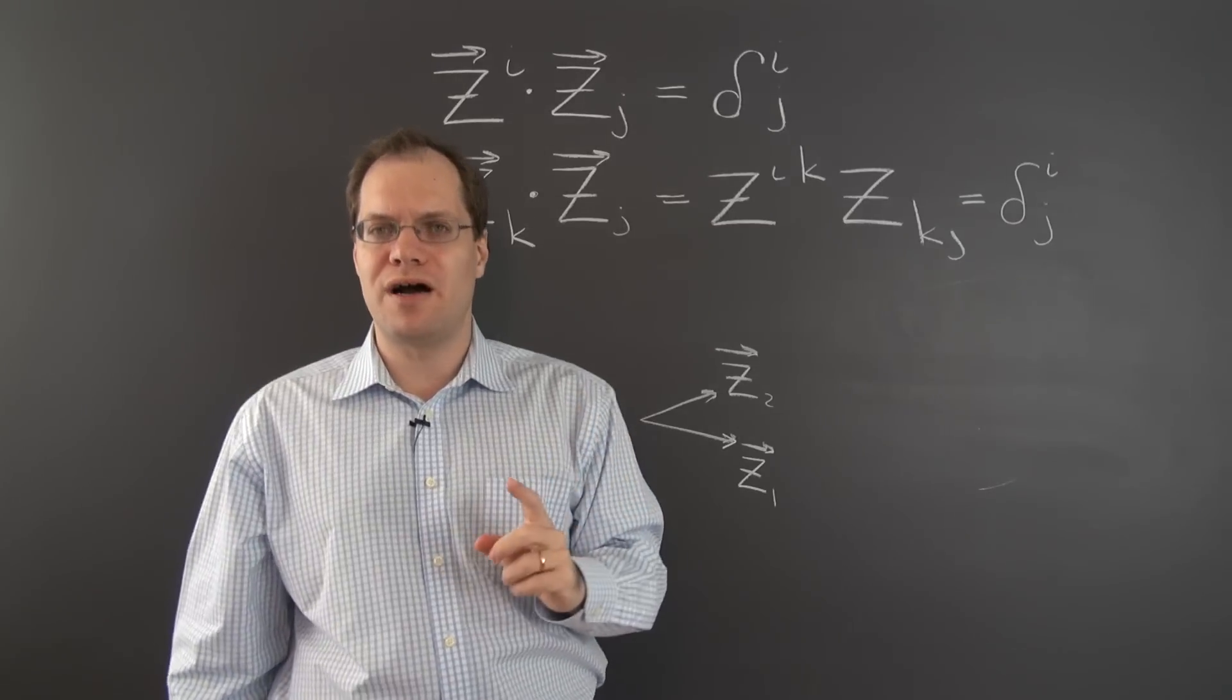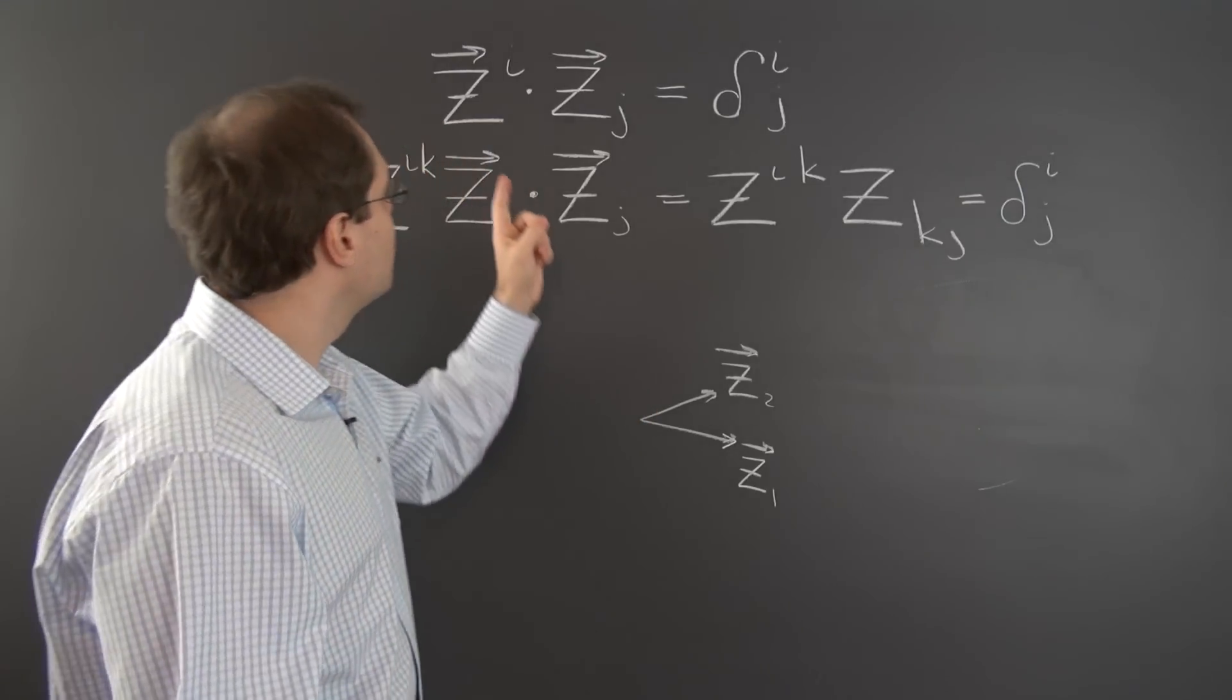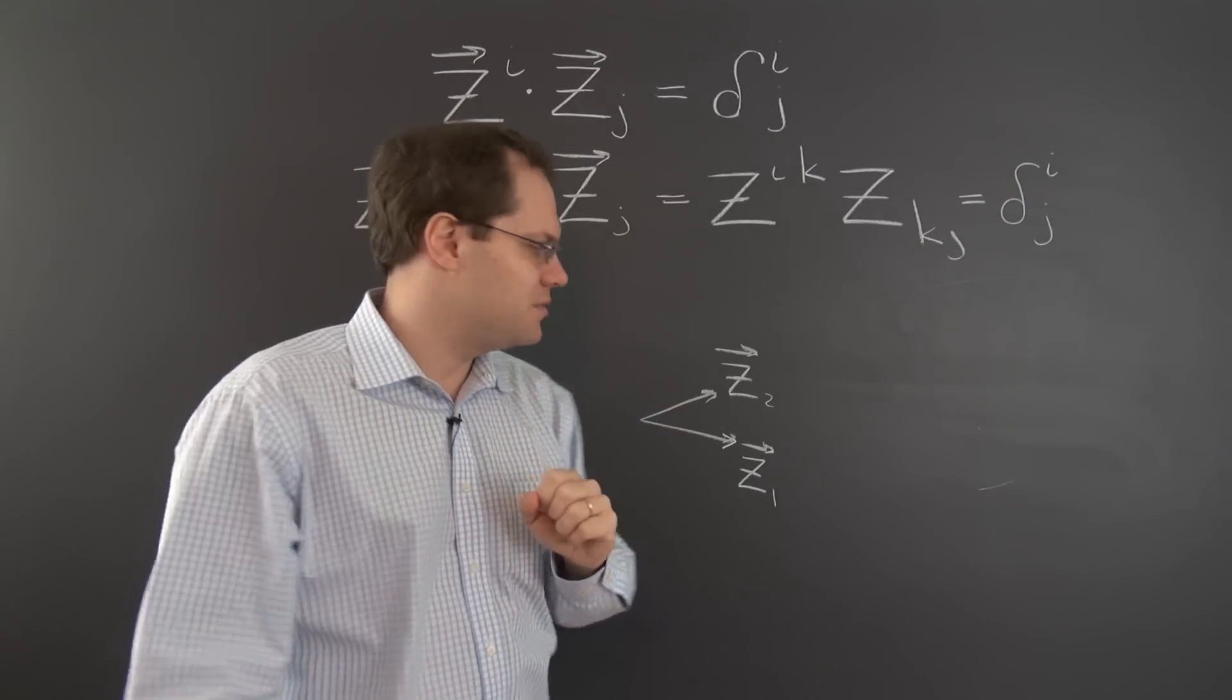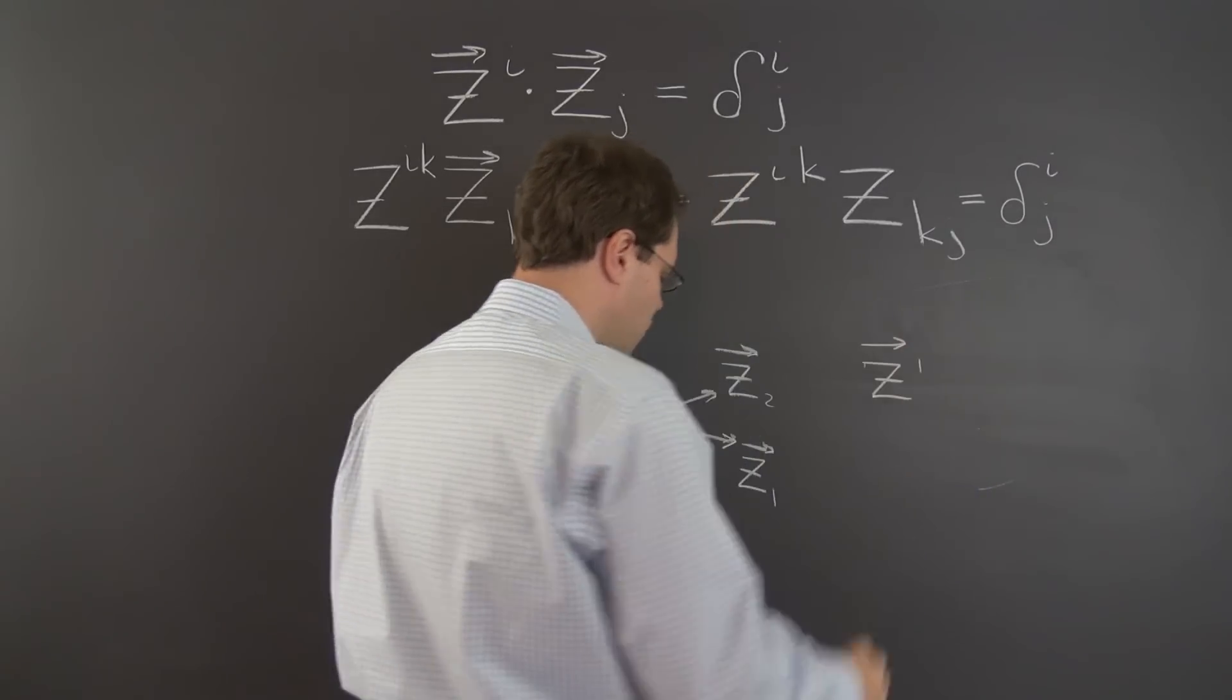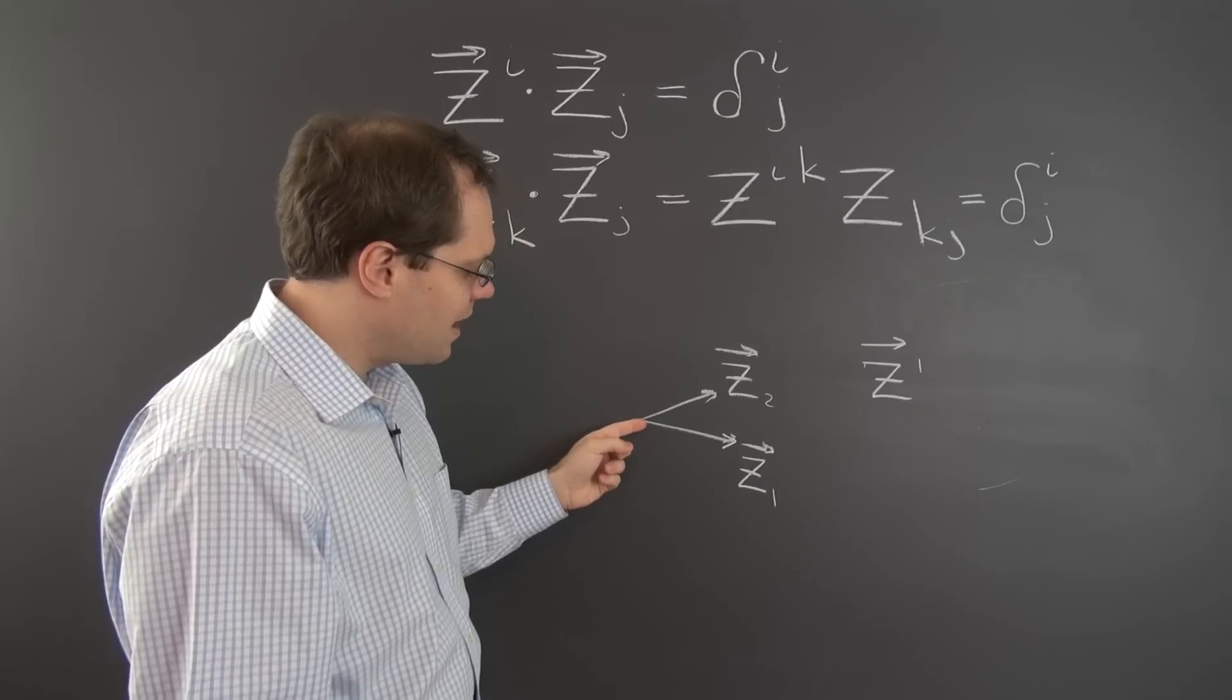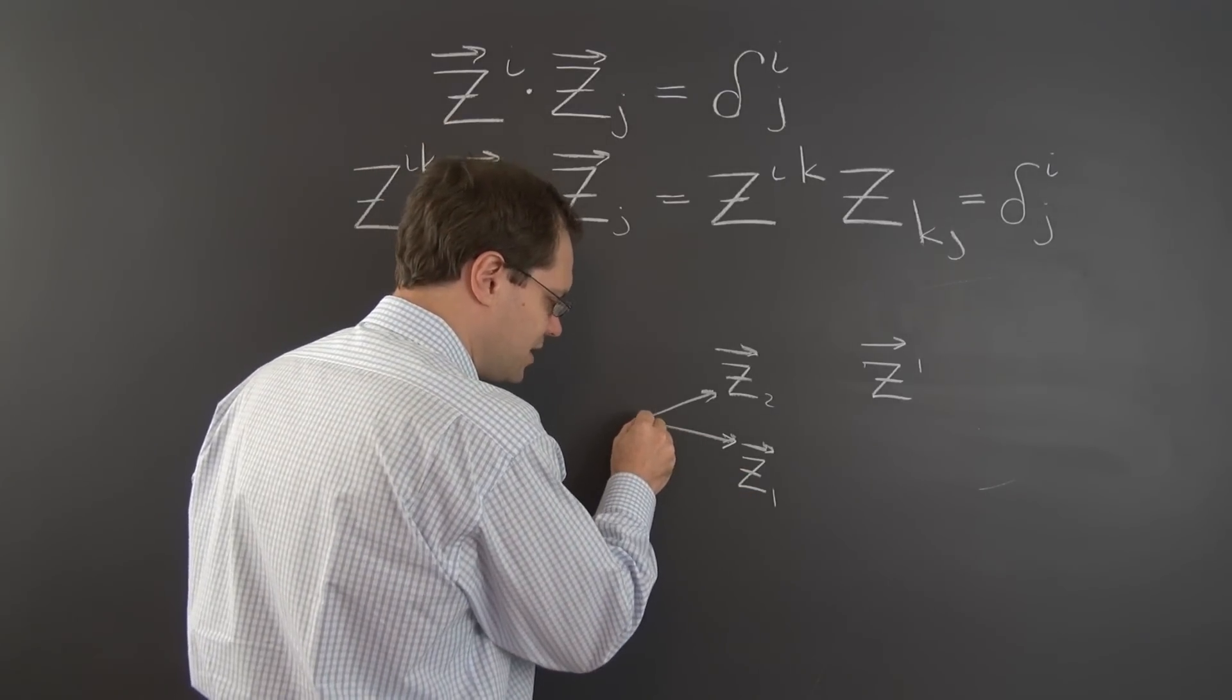Then the contravariant z^1 will be orthogonal to z_2. And its dot product with z_1, with this z_1, will be 1. So it will look, let me make it orthogonal to z_2.